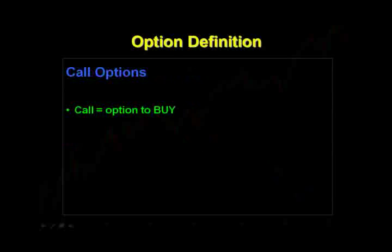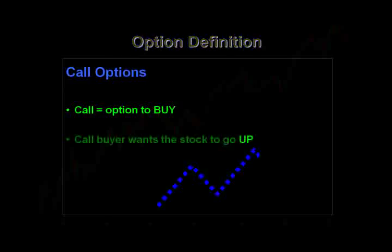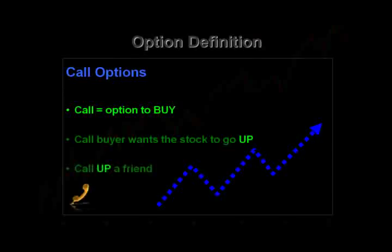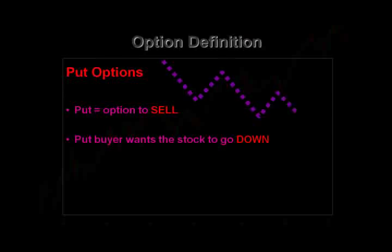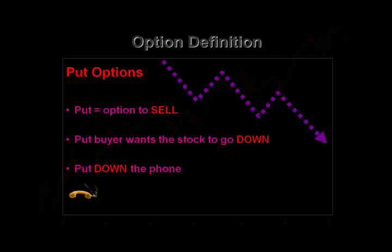Let's look at call options. A call is an option to buy — the call buyer wants the stock price to go up. When you think of a call option, think of calling up a friend; you want the stock price to go up. The put option is exactly the opposite. A put option is an option to sell. When we buy put options, we want the stock to go down — that's how we make our money. Think of a put option as putting down the phone; you want the stock price to go down in order to make money from buying puts.